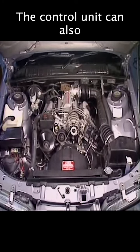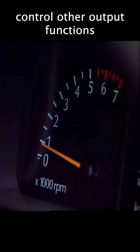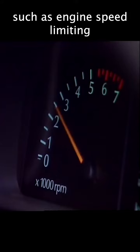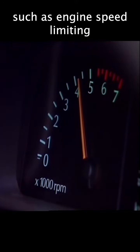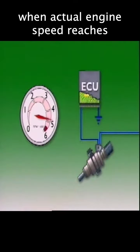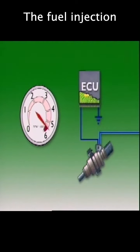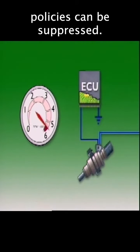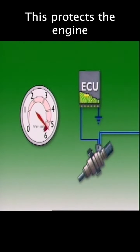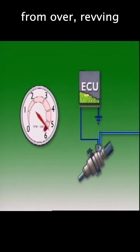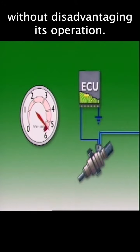The control unit can also control other output functions, such as engine speed limiting. When actual engine speed reaches a programmed maximum, the fuel injection pulses can be suppressed. This protects the engine from over-revving without disadvantaging its operation.